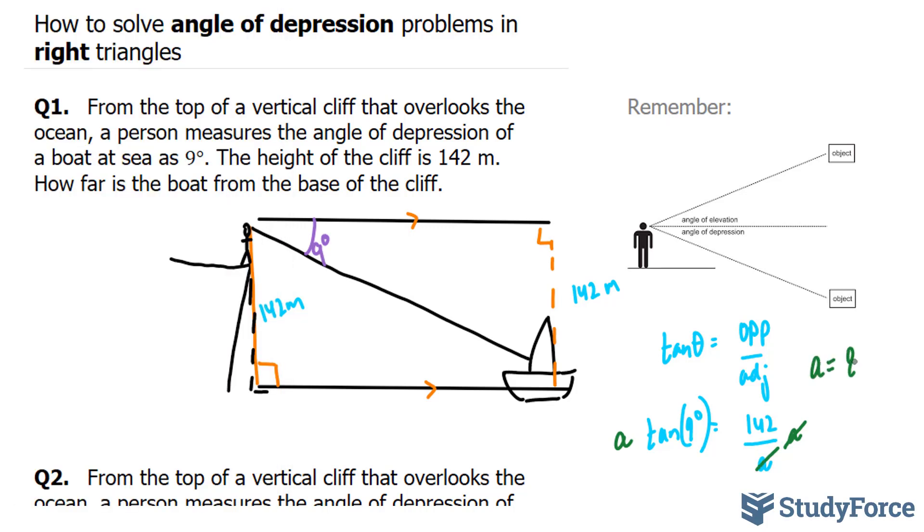So a is equal to 896.55 meters. To summarize what just happened here, the boat is 896.55 meters away from the edge of the cliff.